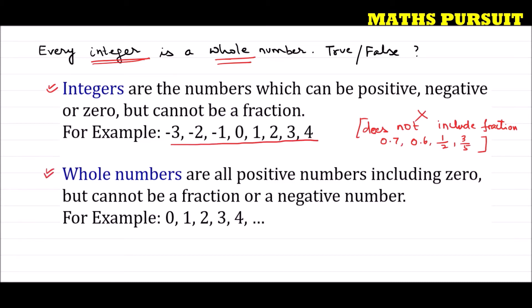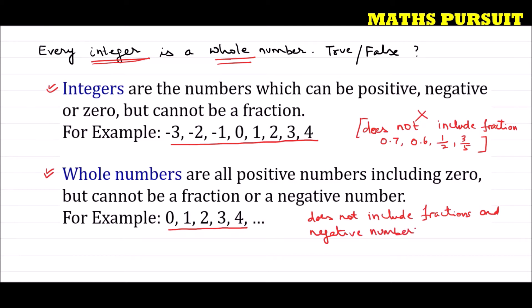Now coming to whole numbers. Whole numbers are all positive numbers including zero, but cannot be a fraction or a negative number. For example: 0, 1, 2, 3, 4. Whole numbers do not include fractions and negative numbers.